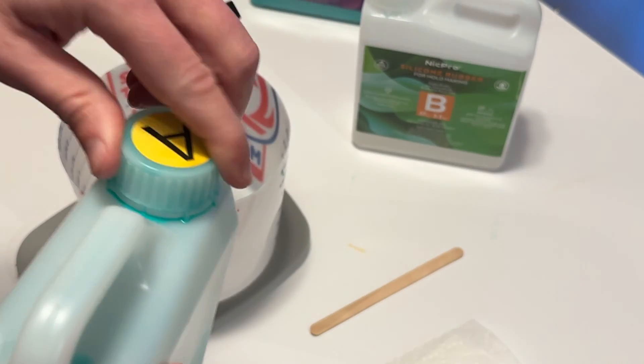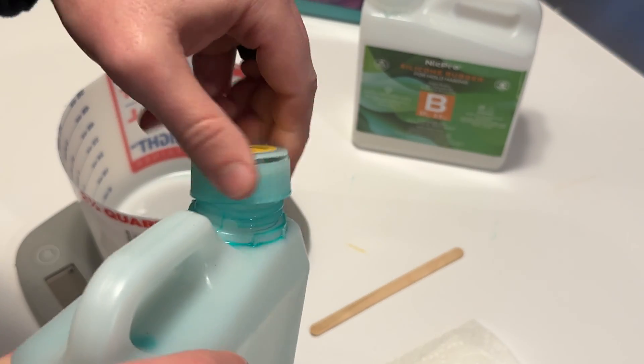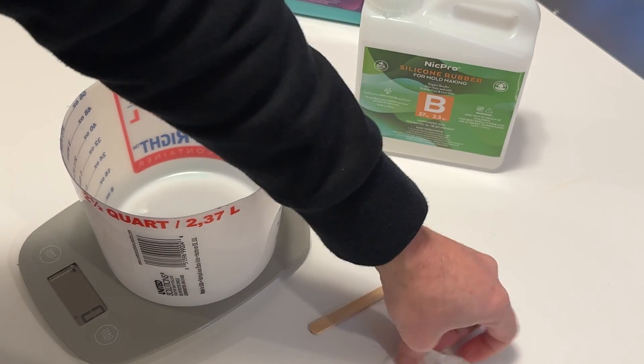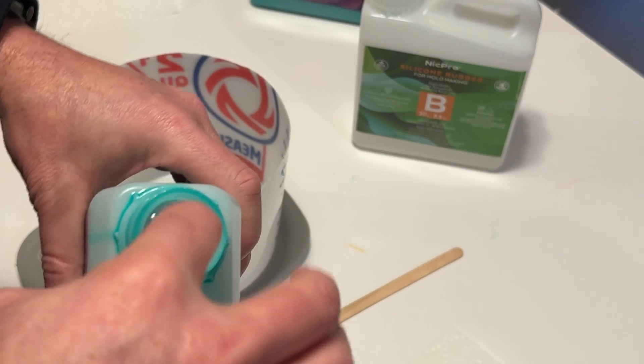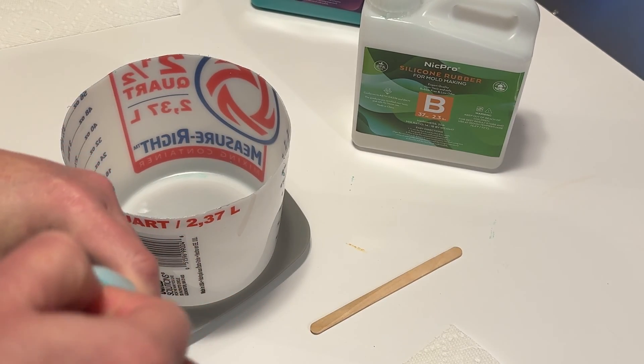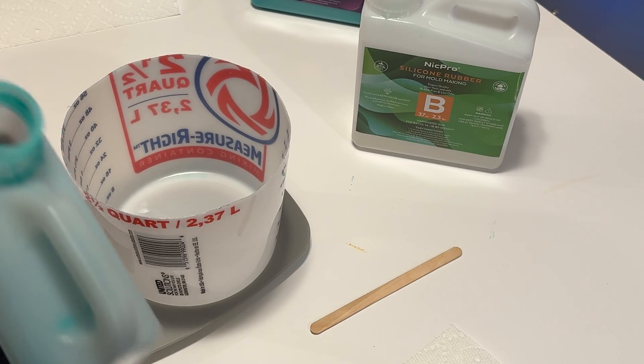This silicone is just a one-for-one by weight, so I have this little cheap scale to help me get my measurements. And I do use this plastic paint cup or paint jug.